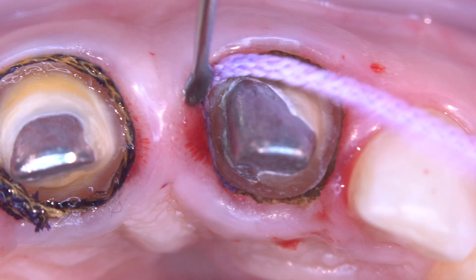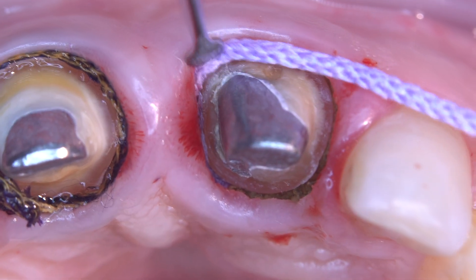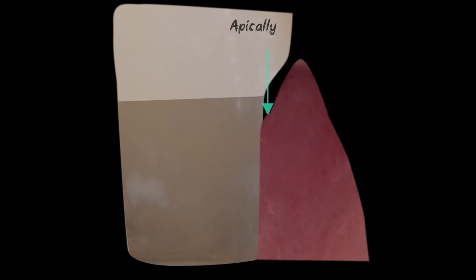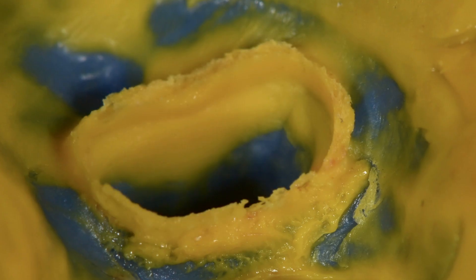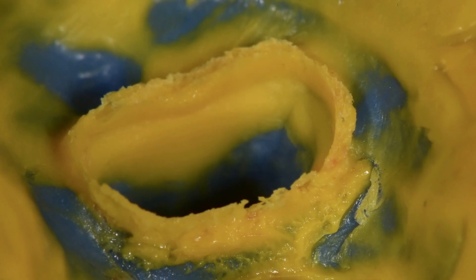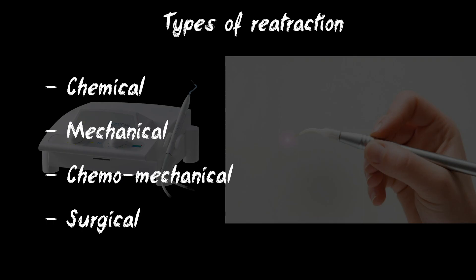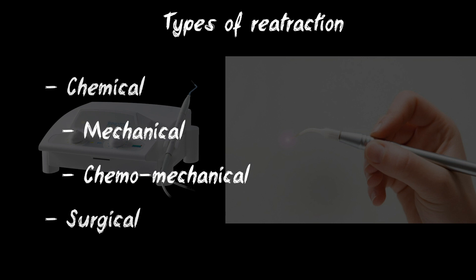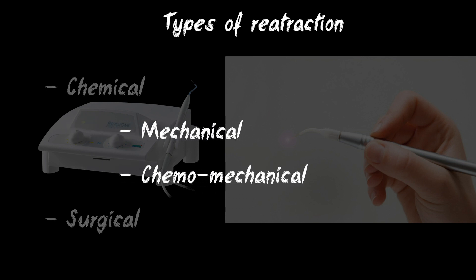Retraction of the gingival margin is a temporary extension of the gingival sulcus. A correct combination of apical and lateral direction of retraction allows achieving high quality display of the edge of preparation. In the practice of prosthodontists, mechanical and chemo-mechanical types of retraction are most often used.